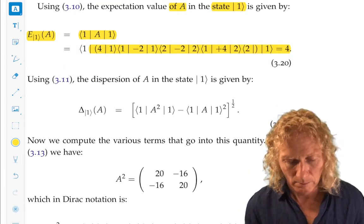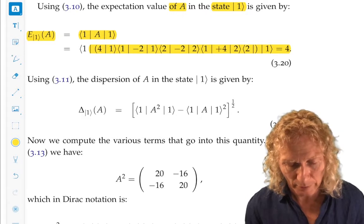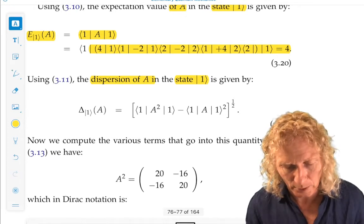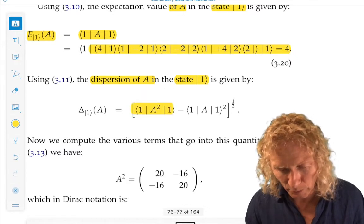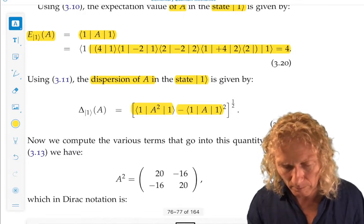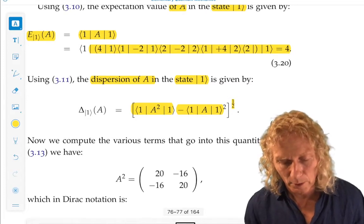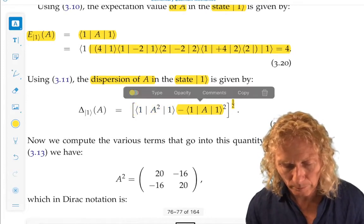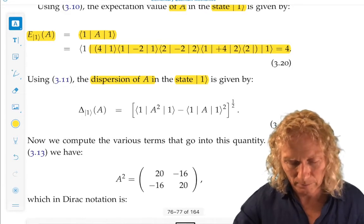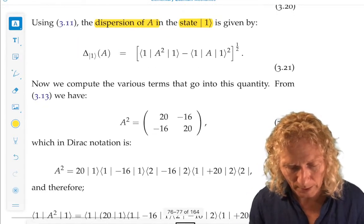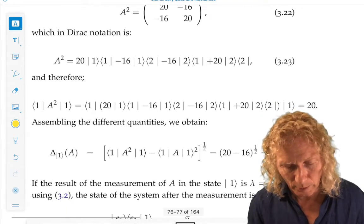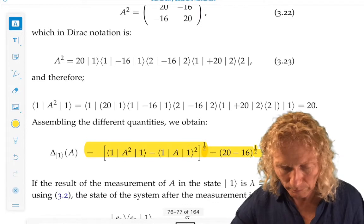So now, why don't we compute the dispersion of A in the state 1. We need to compute what? We need to compute the expectation value of A², minus the expectation value of A, quantity squared, and then take the square root of it. We've just computed the expectation value of A, and we can square it. But now, to compute this, we've got to do some algebra. Not too bad. Compute A², write down the expression in Dirac notation. It's a little bit involved. Compute the expectation value, you put it all together, and you get 2.